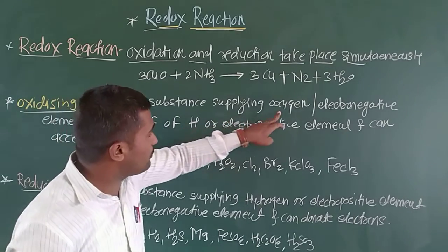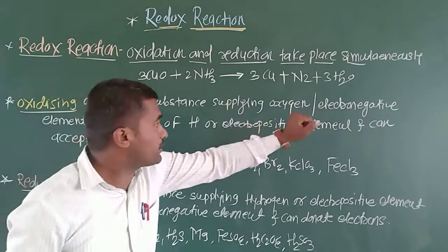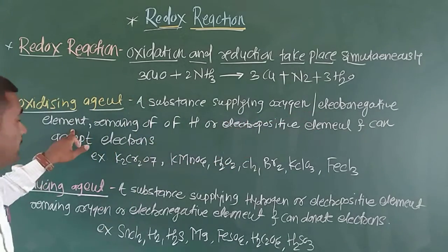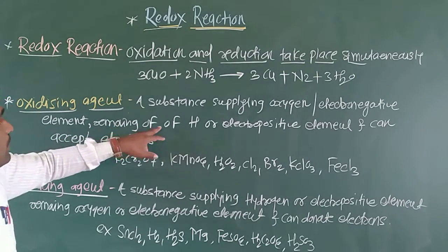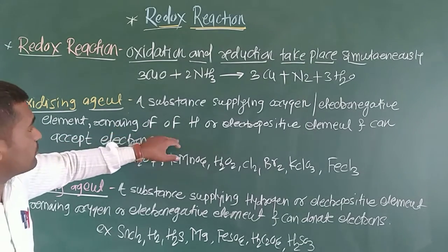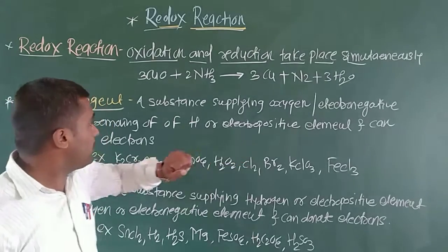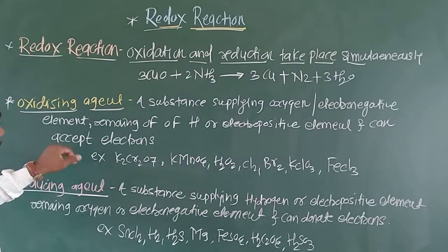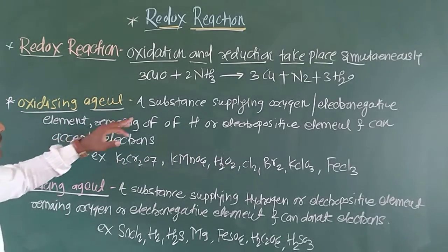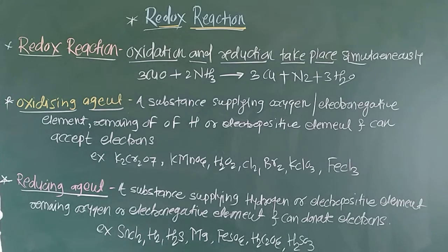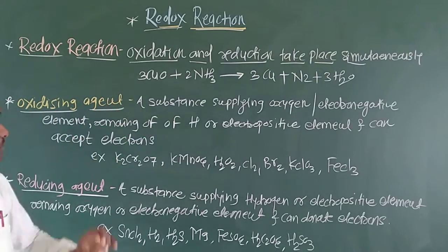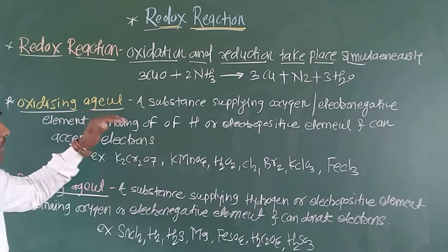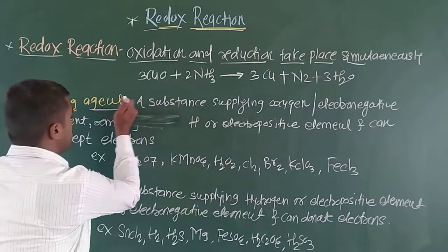An oxidizing agent is a substance that supplies oxygen or an electronegative element, or removes hydrogen or an electropositive element, or can accept electrons. So an oxidizing agent may supply oxygen or supply an electronegative element.